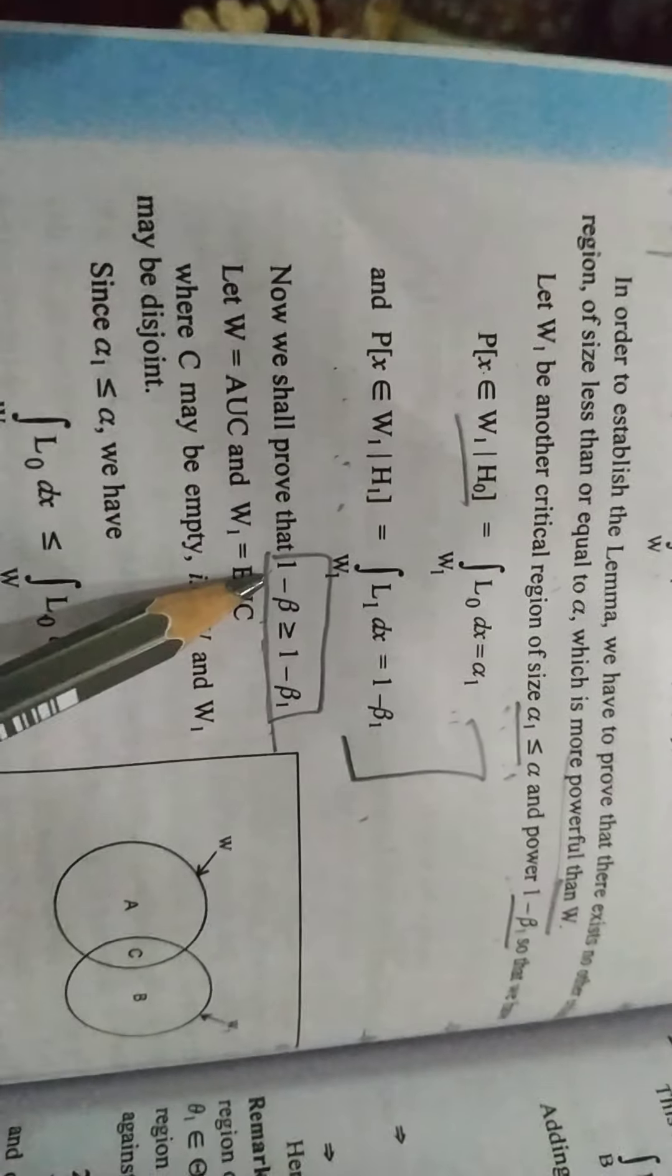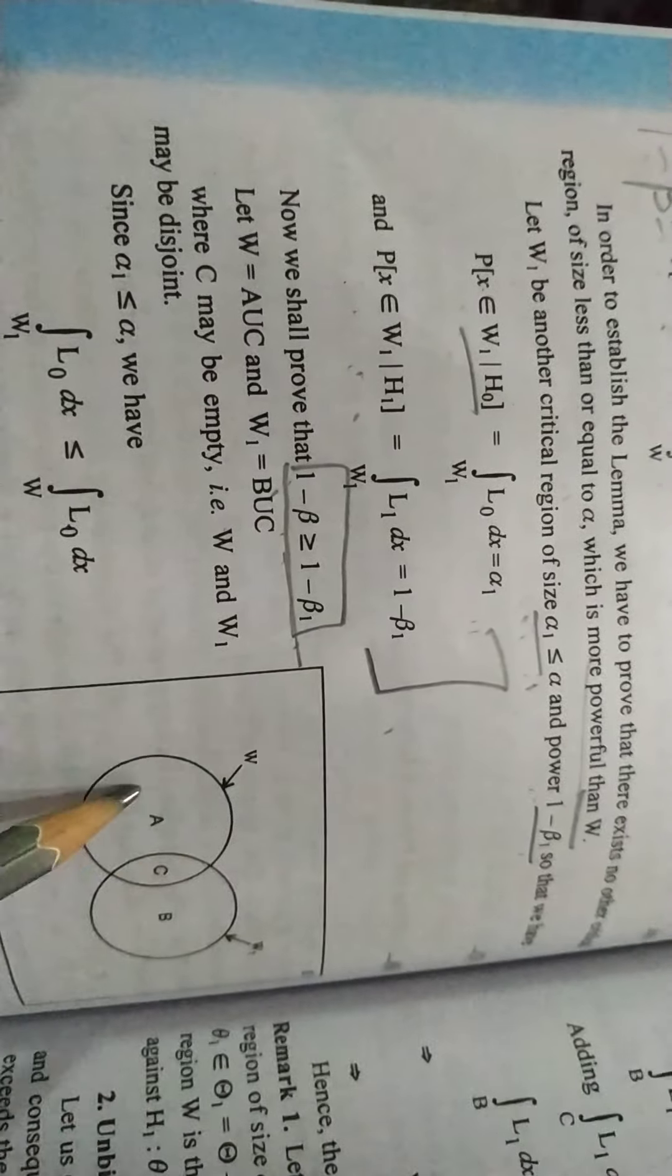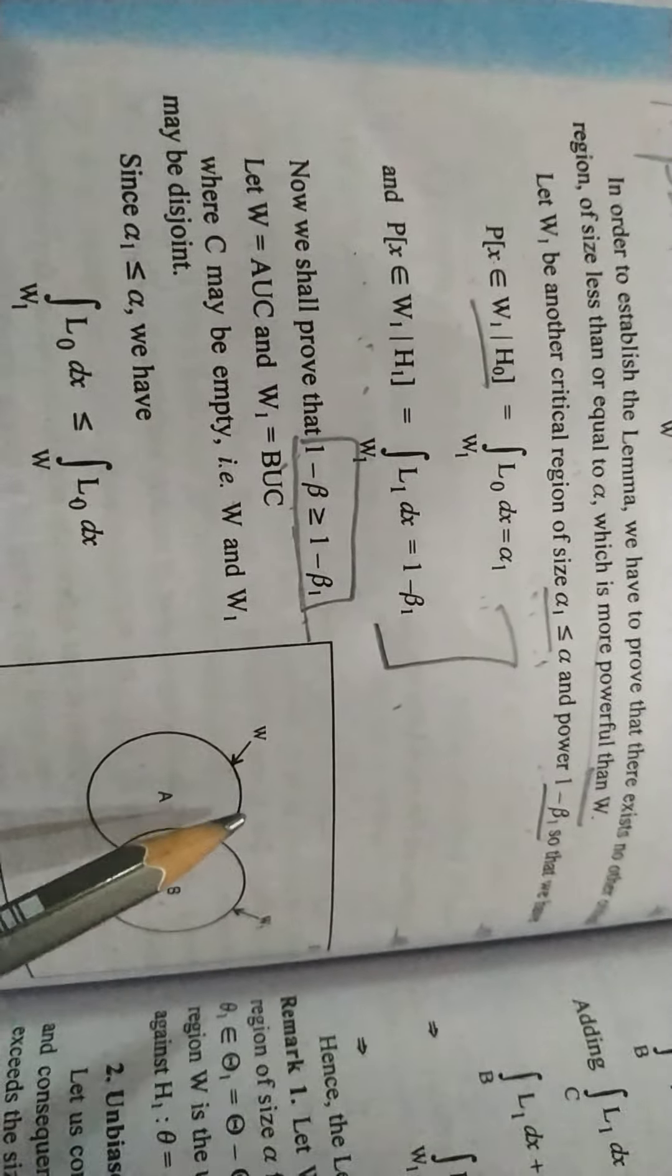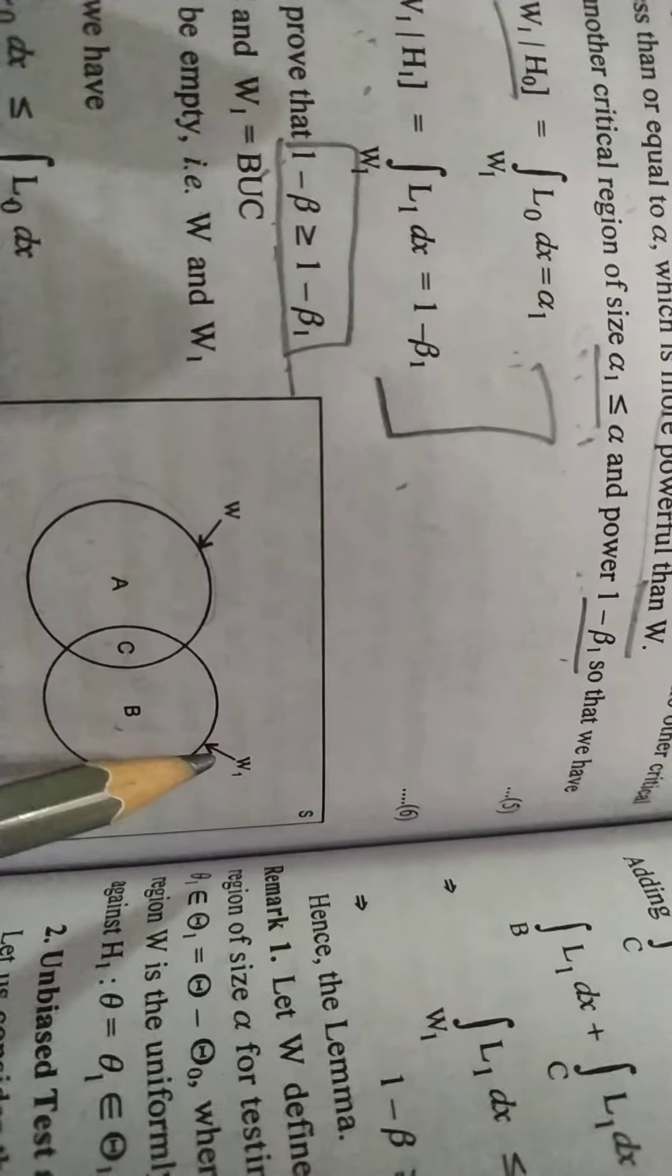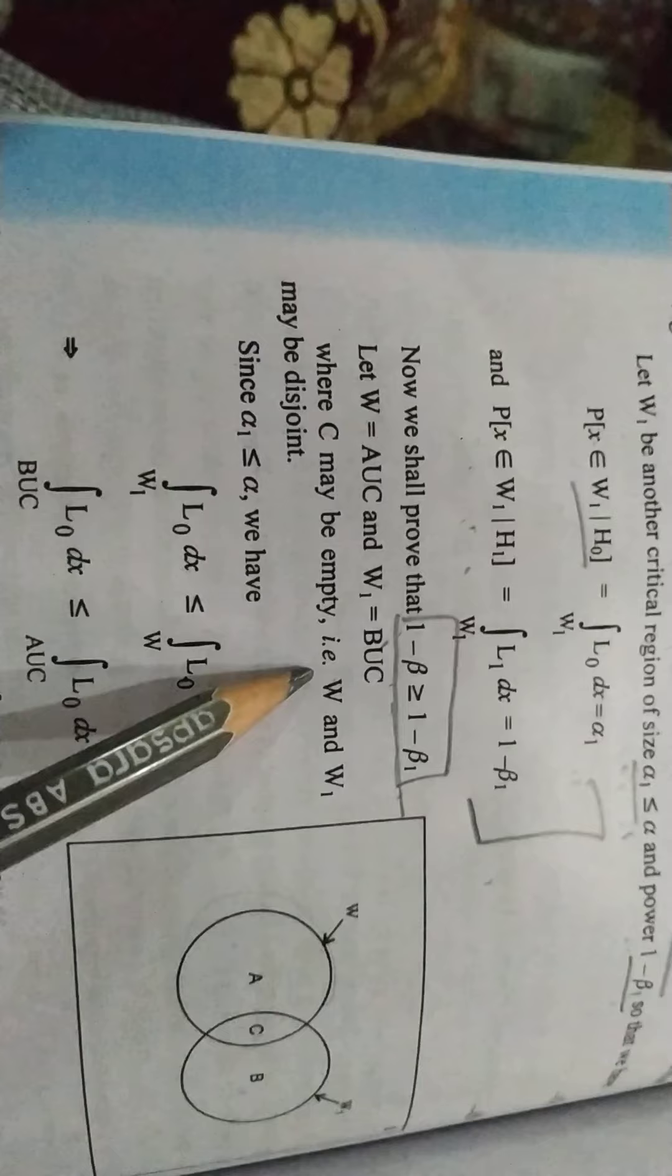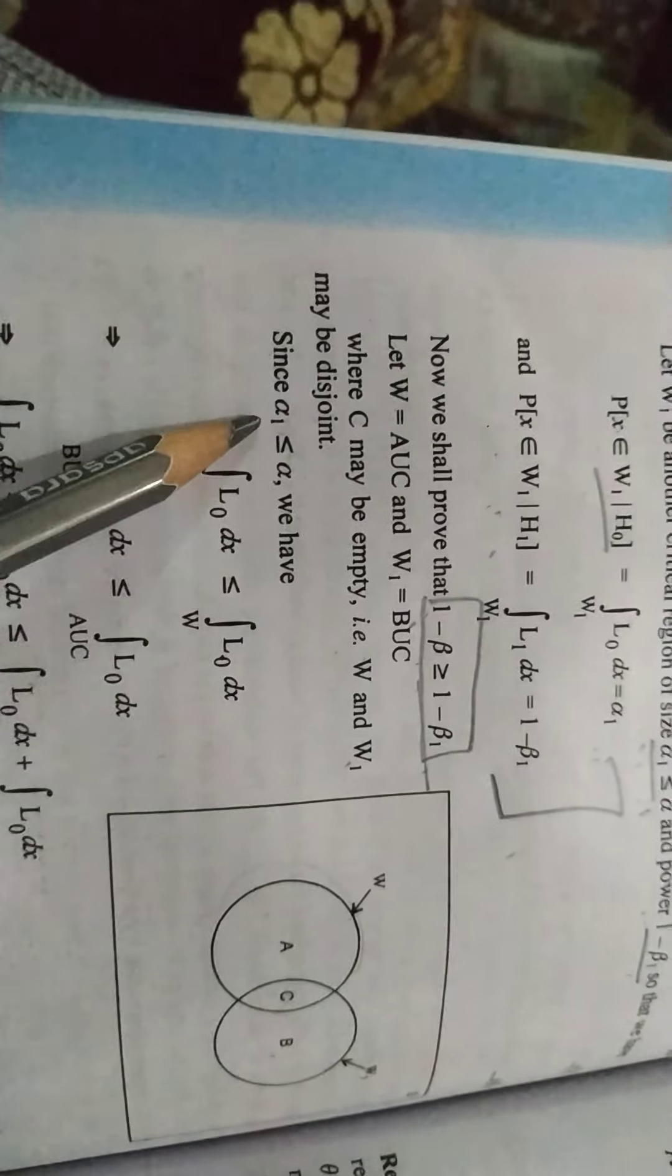I have taken a region that has its size from the other. So we show that its power is much more. Now I have set here A, C, B. W which is critical region, union of A and C. W1 which is union of B and C. C is empty set, so W and W1 is disjoint.